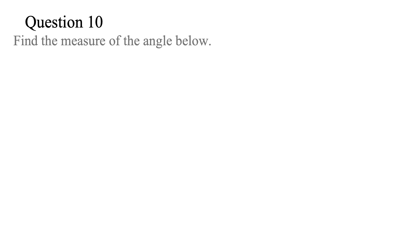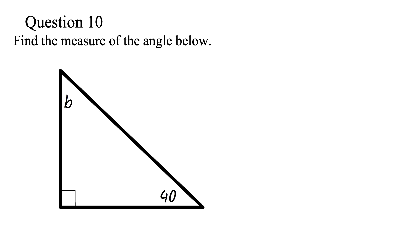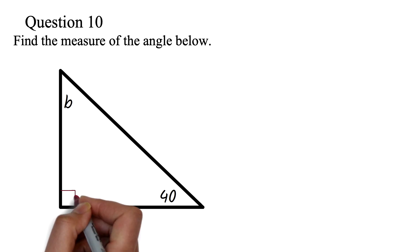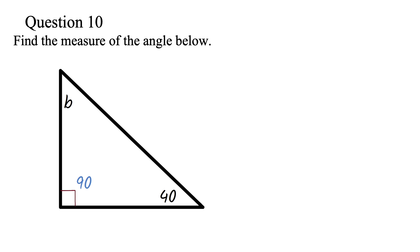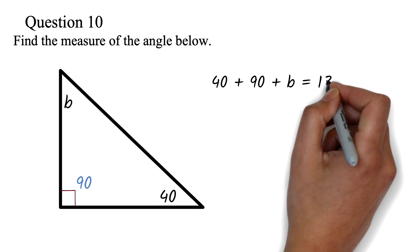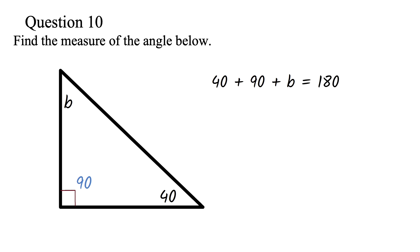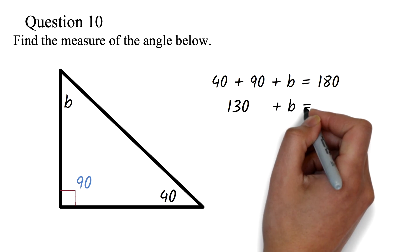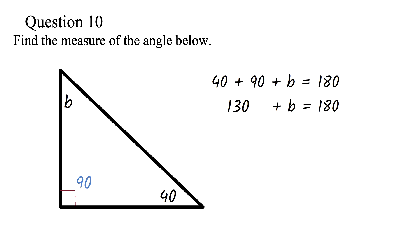Question 10: Find the measure of the angle below. The first thing to identify is that this is a right triangle because of the square mark, meaning this angle is 90 degrees. The sum of the interior angles of a triangle is 180 degrees. So we add 40 plus 90 plus B equal to 180. 40 plus 90 is 130, so 130 plus B equals 180. Subtracting 130 from both sides gives B equals 50 degrees.